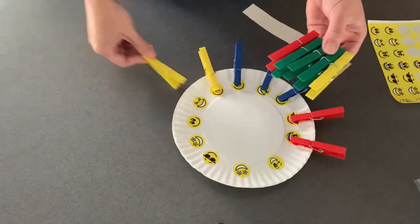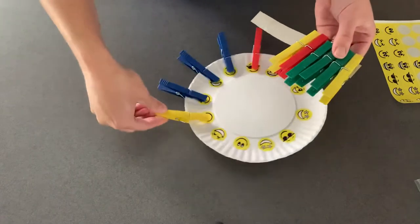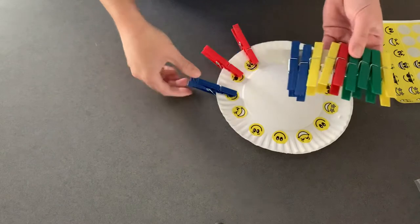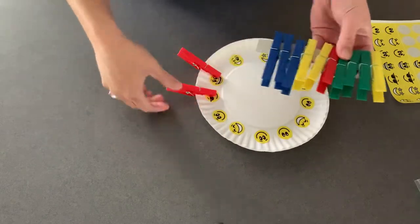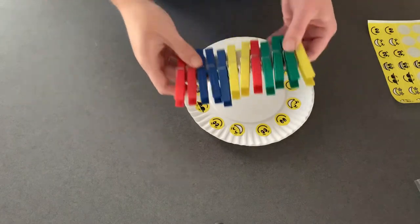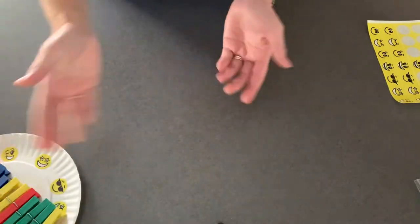You can turn the plate. Take all of them off. Good job. Awesome. Last one. So that's the first activity for fine motor strengthening and bilateral hand coordination.